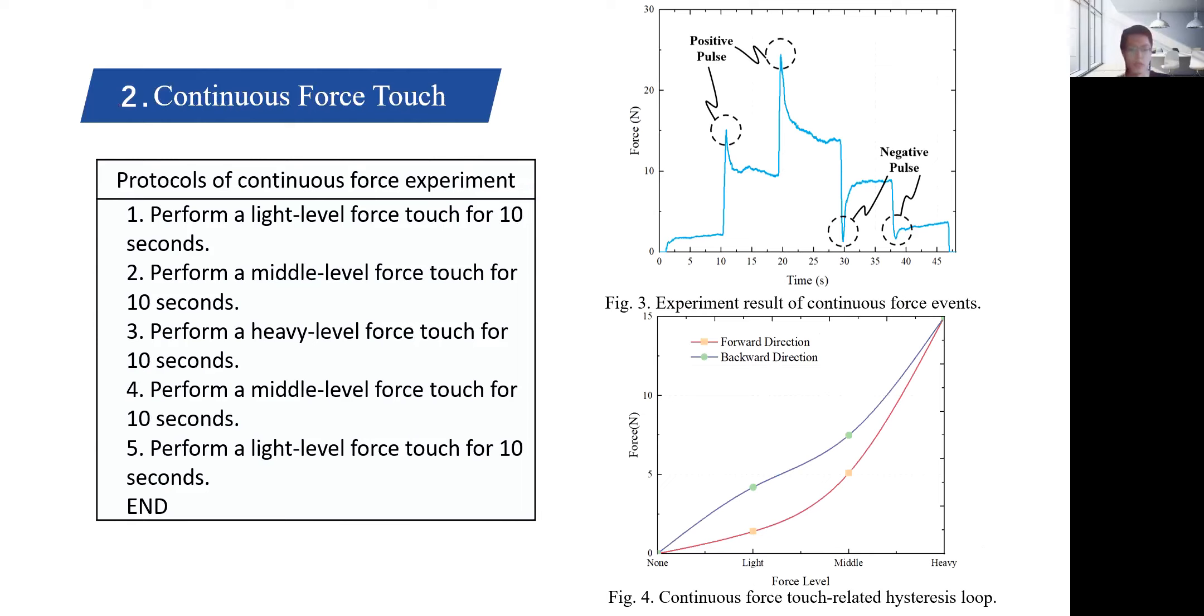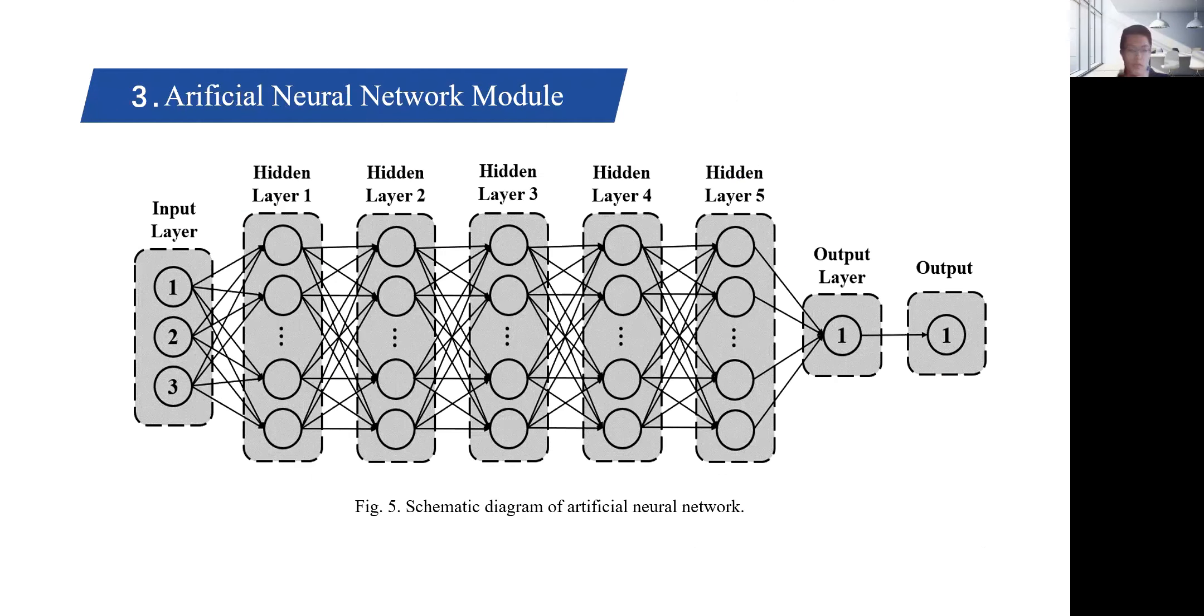When force level increases, a positive pulse appears, and when force level decreases, a negative pulse appears. The amplitude, slope, and width of the pulse are related to the force level. In the process of force increase or decrease, the same force level may have different stable values, which causes hysteresis and leads to force misregistration.